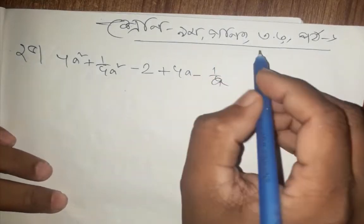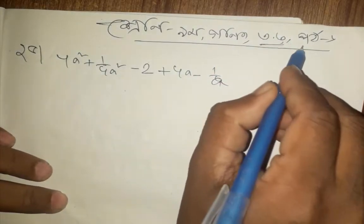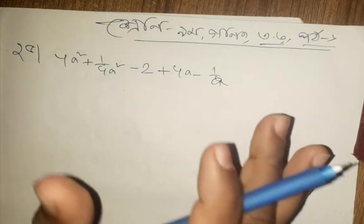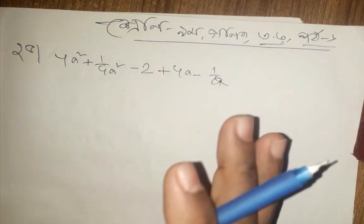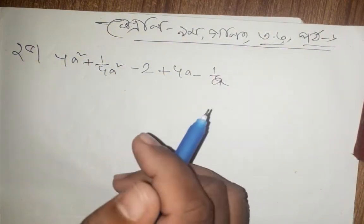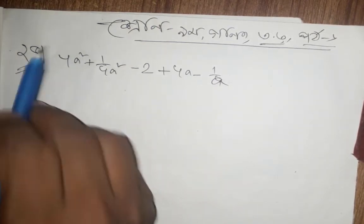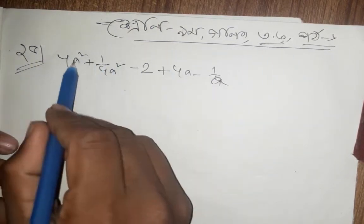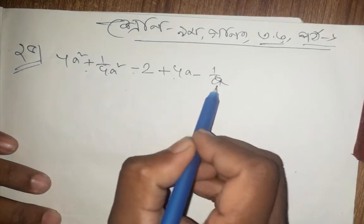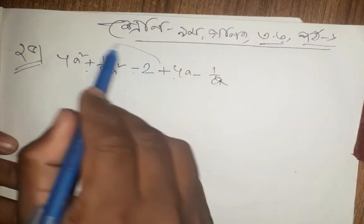We have 6 numbers and we have 6 numbers. We have 6 numbers and we have 4 numbers. We have 5 numbers. 4a squared plus 1 by 4a squared minus 2 plus 4a minus 1 by 4a squared. We have 3 numbers.